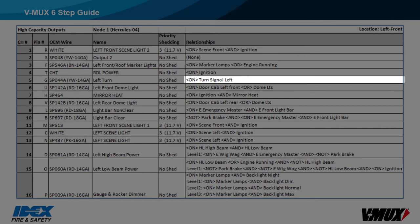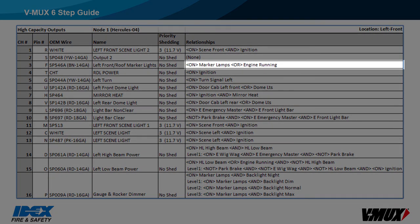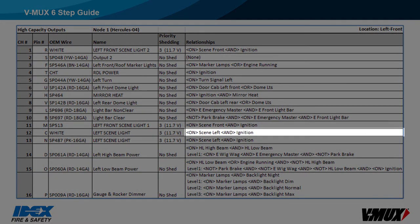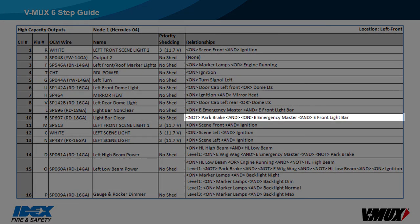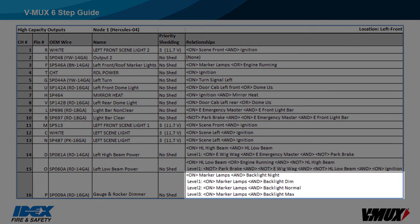In the relationship column: On means the command needs to be on — left turn on output 5 is on with turn signal left. Or means one command or another needs to be on — roof marker lights are on with either marker lamps or engine running. And means multiple commands need to be on — left scene is on with scene left and ignition. Not means the command must be off — light bar clear is on with not park brake, and E emergency master, and E front light bar; it can only be on if the park brake is released. Relationship levels allow an output to perform different functions for different conditions — the left high beam is on solid for regular high beam operation, and will flash for wigwag operation. The gauge and rocker dimmer output uses relationship levels to adjust PWM levels for gauge backlighting. Think of a relationship level as OR logic — it will be on with either one set of conditions or another.